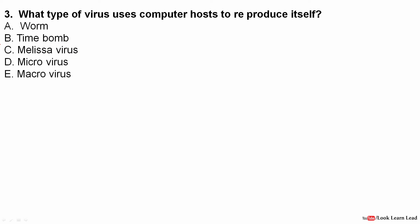Next question: what type of virus uses a computer host to reproduce itself? The answer is a worm. A worm uses the host computer to reproduce itself and keeps reproducing until the memory of the host computer is full. Another important term: a time bomb is software that will start or stop functioning after a predefined date or time. A time bomb is a type of logic bomb.